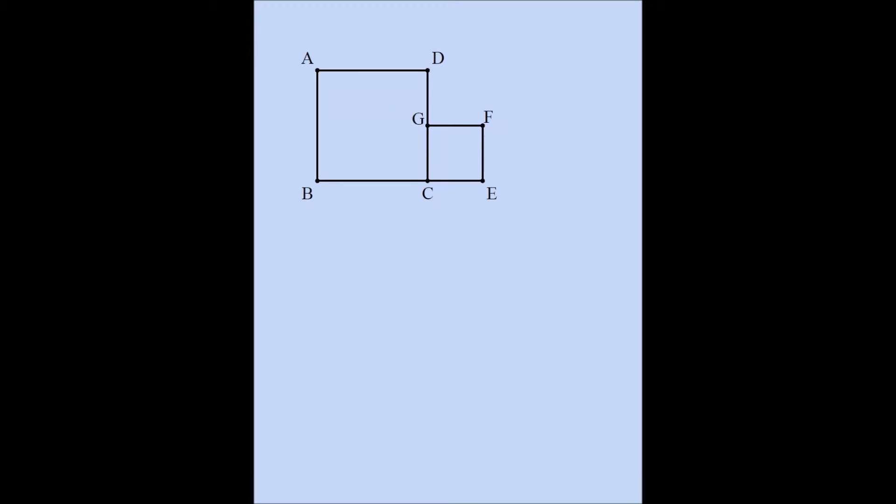We're going to prove the Pythagorean theorem in a non-traditional way. The statement of the theorem is as follows: the sum of the squares on the legs of any right triangle is equal to the square on the hypotenuse of the triangle.